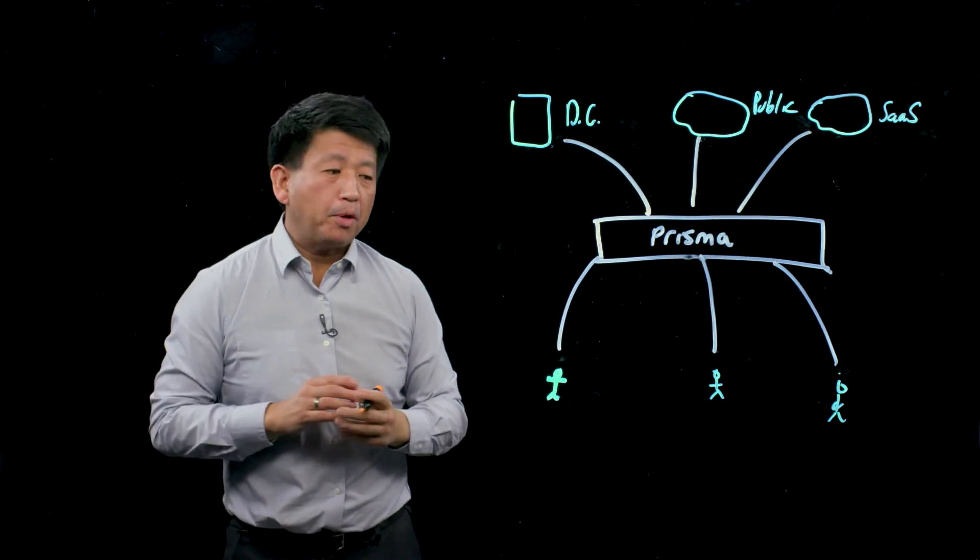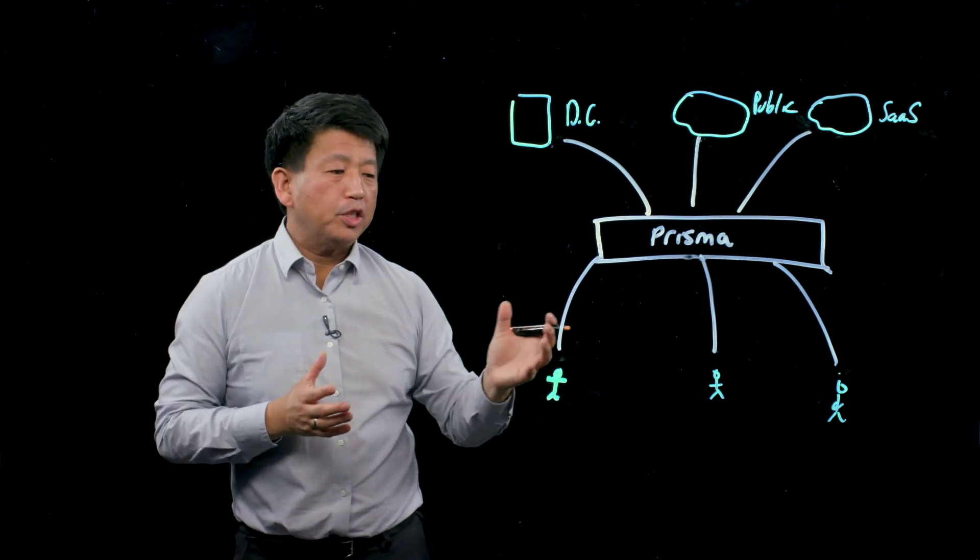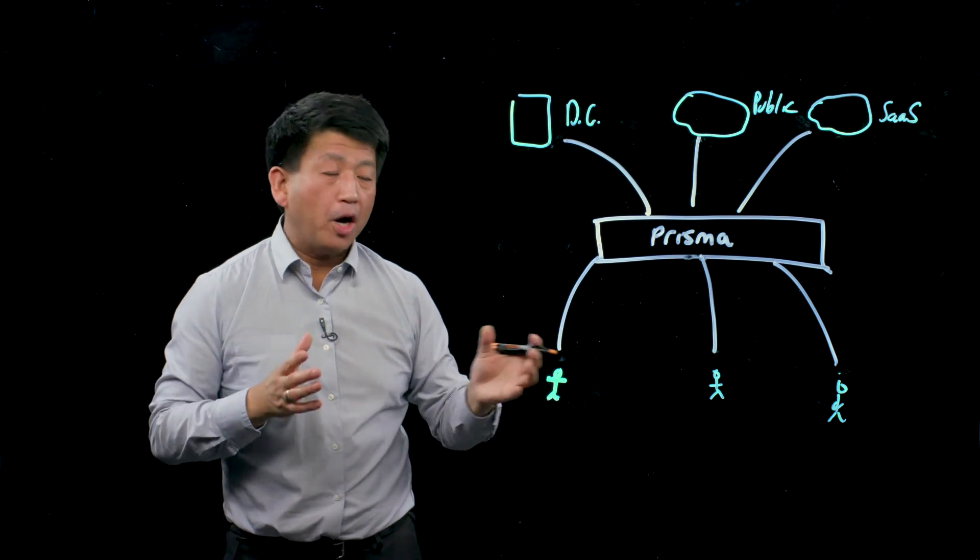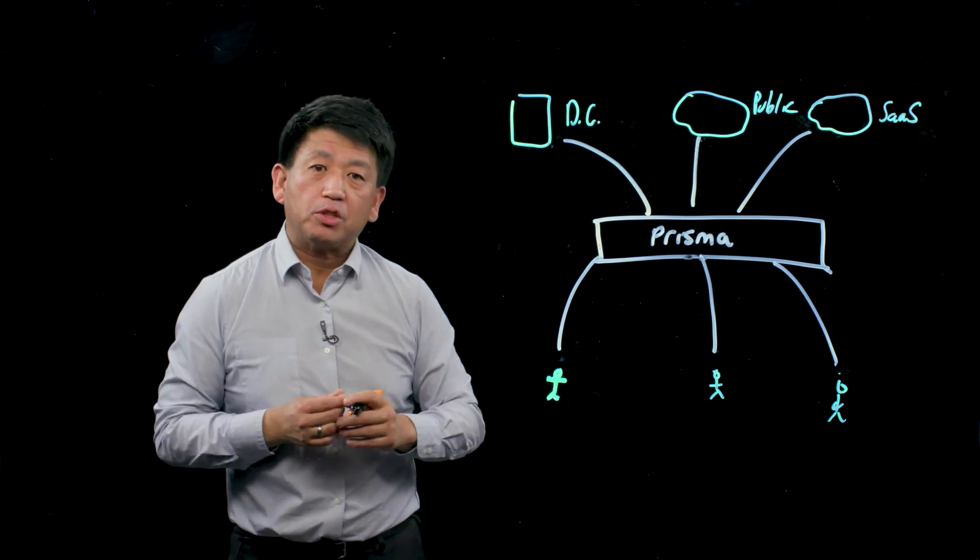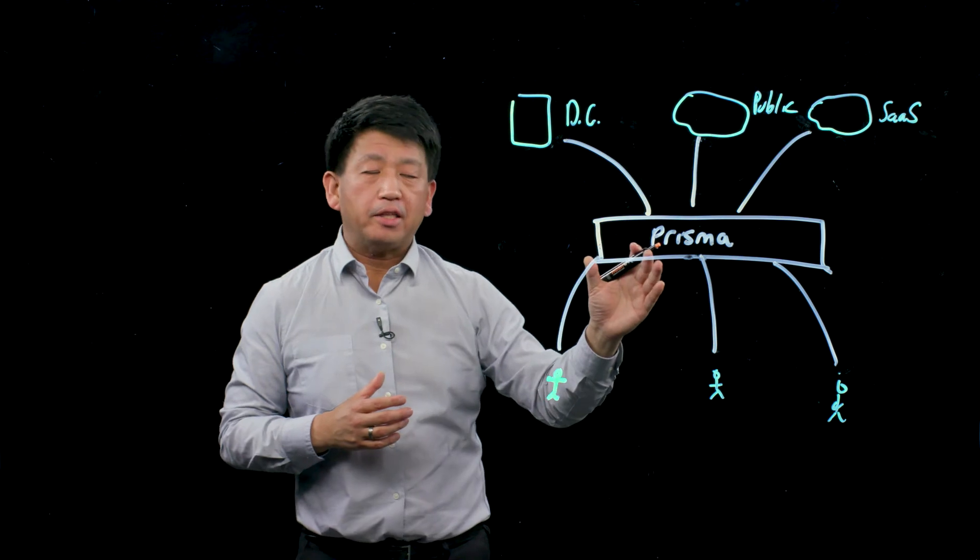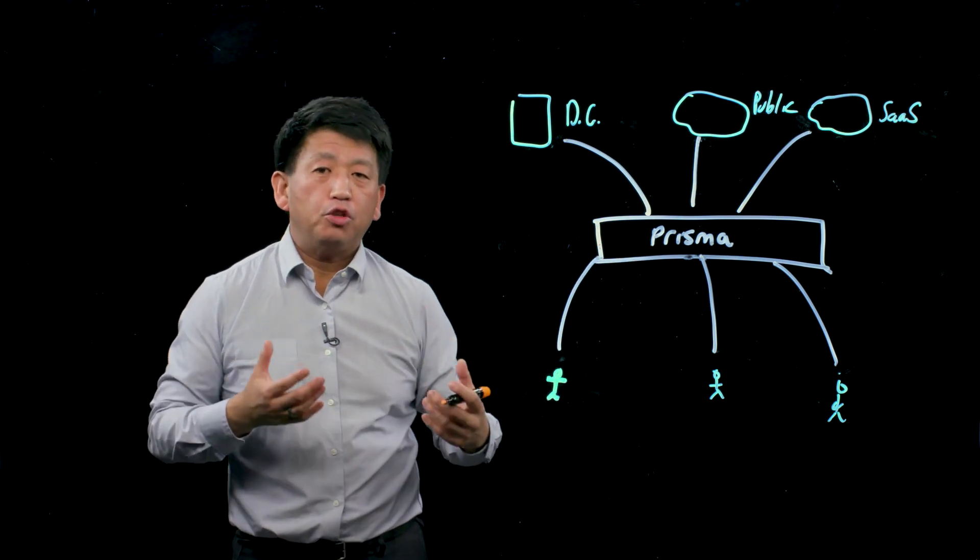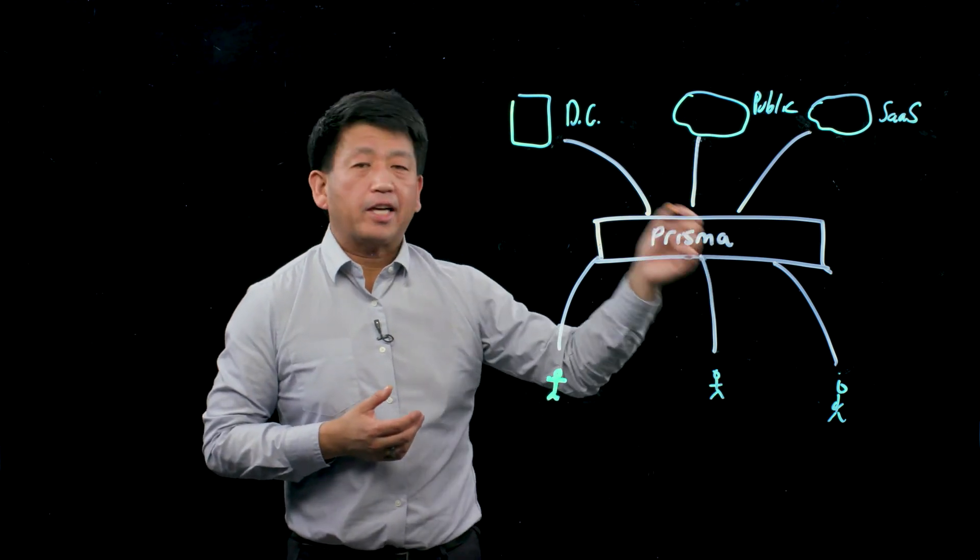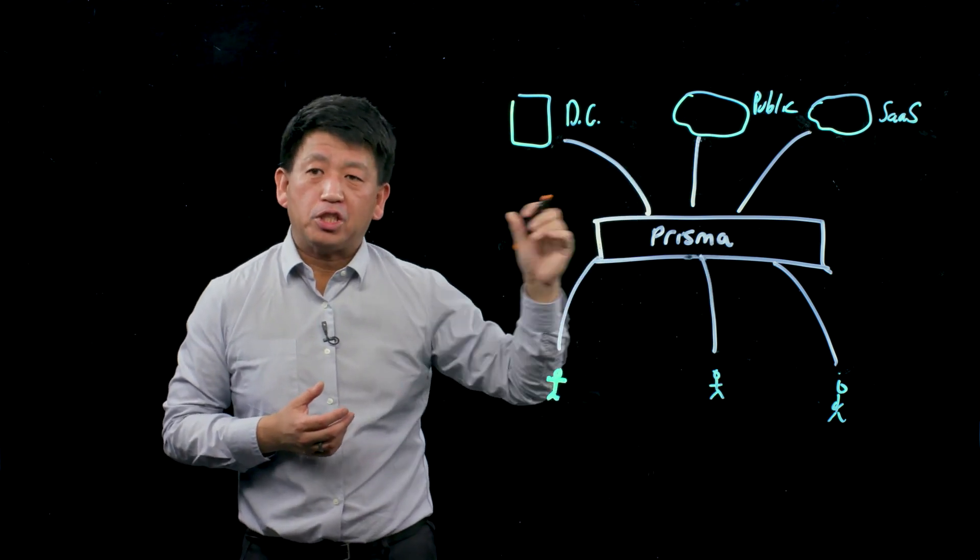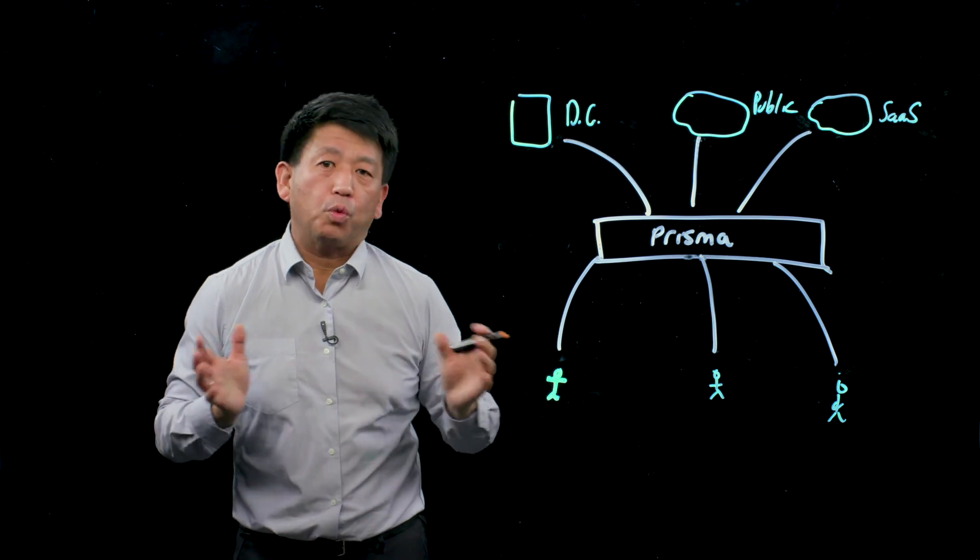Now you're probably wondering, how can we do this? We can use both a model where we take a managed device, where we use an app that automatically connects to Prisma, as well as support the ability to use unmanaged devices and BYOD devices to access the appropriate level of applications that those users should have. So that's Prisma in a nutshell, and being able to use this for Zero Trust in order to protect your data.